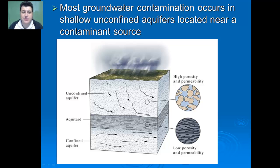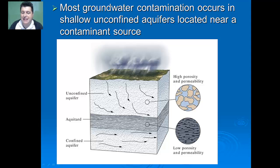Contamination will happen mostly in shallow, unconfined aquifers because the confined aquifer is oftentimes protected with an impermeable surface called an aquitard. So until the water from that confined aquifer meets an area where it can be introduced to that pollutant, it's going to be maintained as pretty clean water.